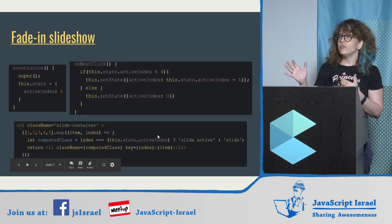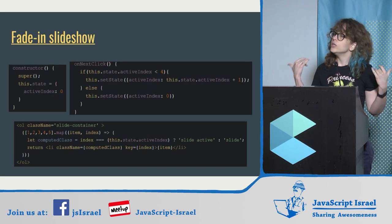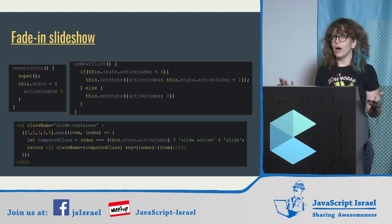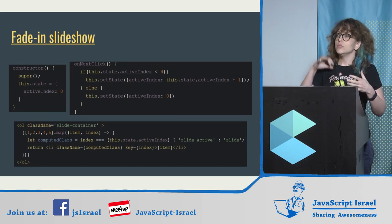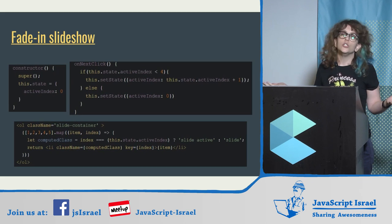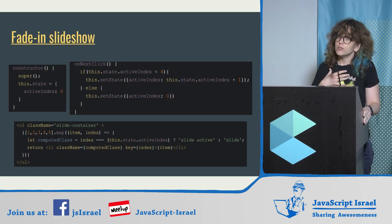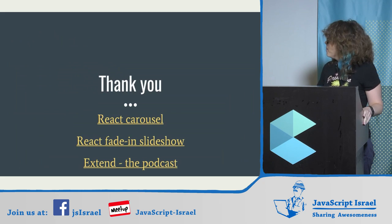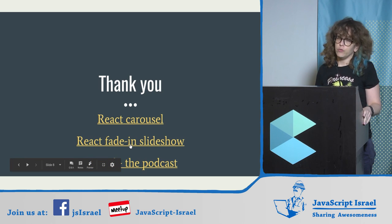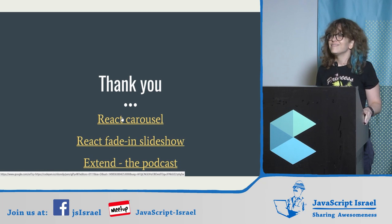These are two pretty straightforward examples, but they're good illustrations of the thought process you need when thinking about animations in React. If you understand the reasoning beneath them, I found you can do almost any kind of animation you want without external libraries. The two CodePens are there — feel free to look at them, play with them, and thanks!